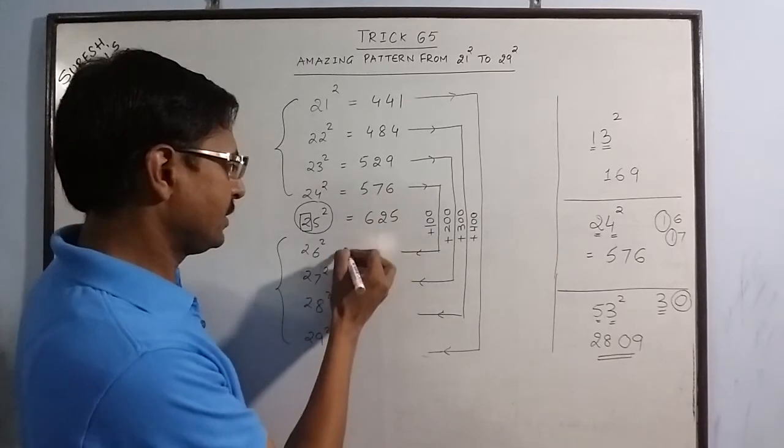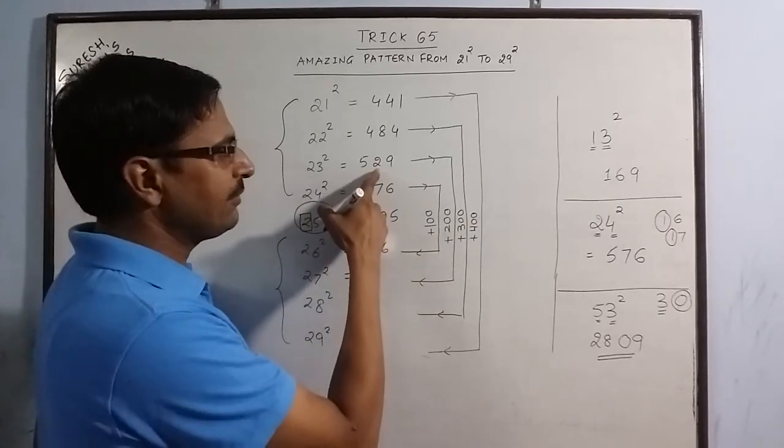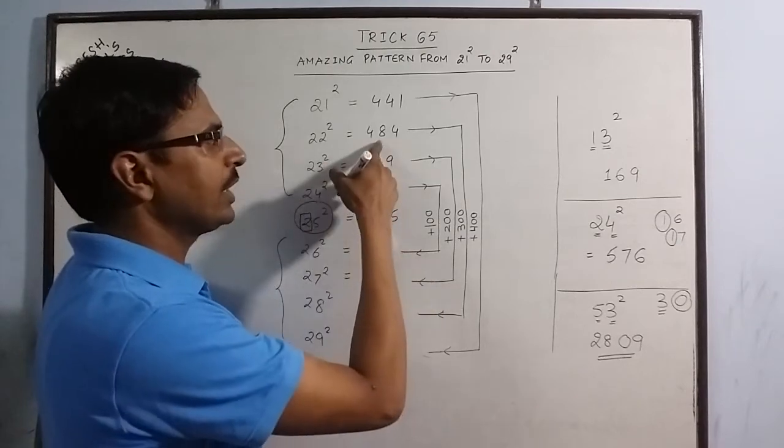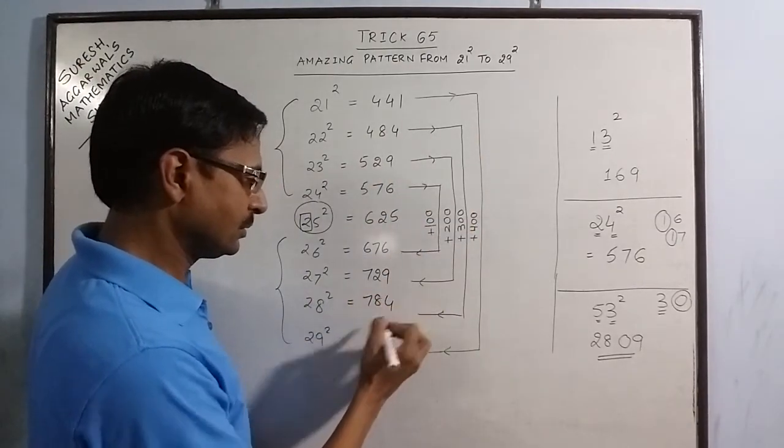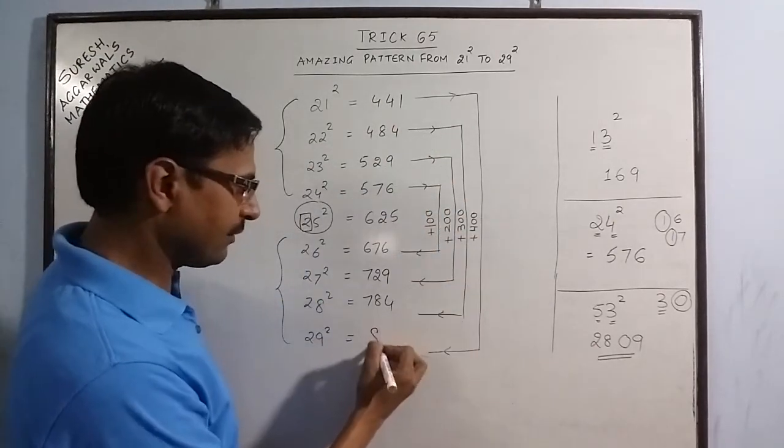576 plus 100 is 676. 529 plus 200 is 729. 484 plus 300 is 784. And finally we have 441 plus 400 is 841.